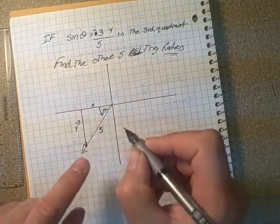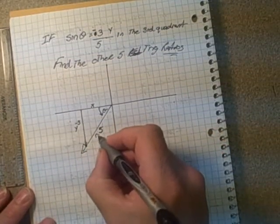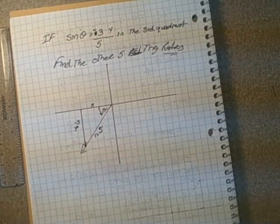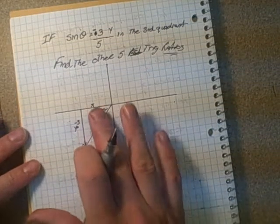So we now know that this r is equal to 5, and this y is equal to -3. Okay? It's a third quadrant angle. It makes sense that it's negative there. And now we have to calculate x.